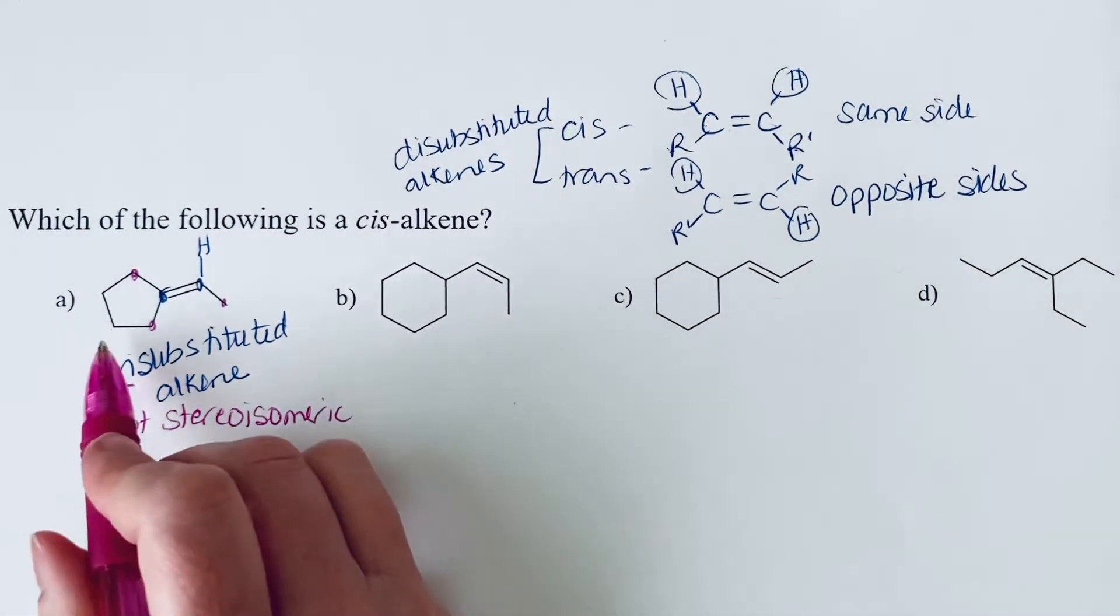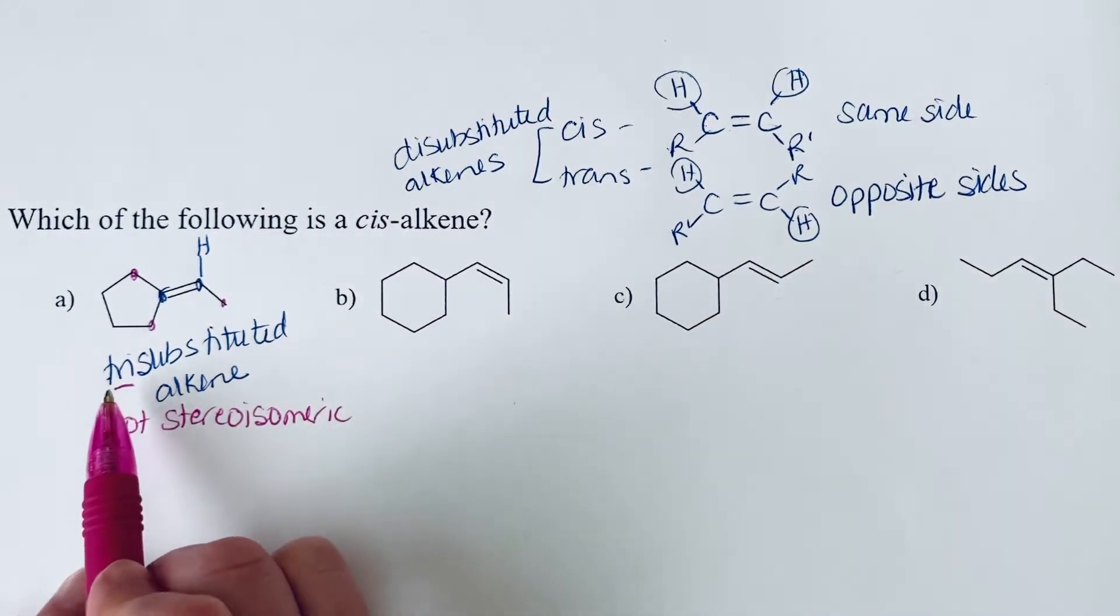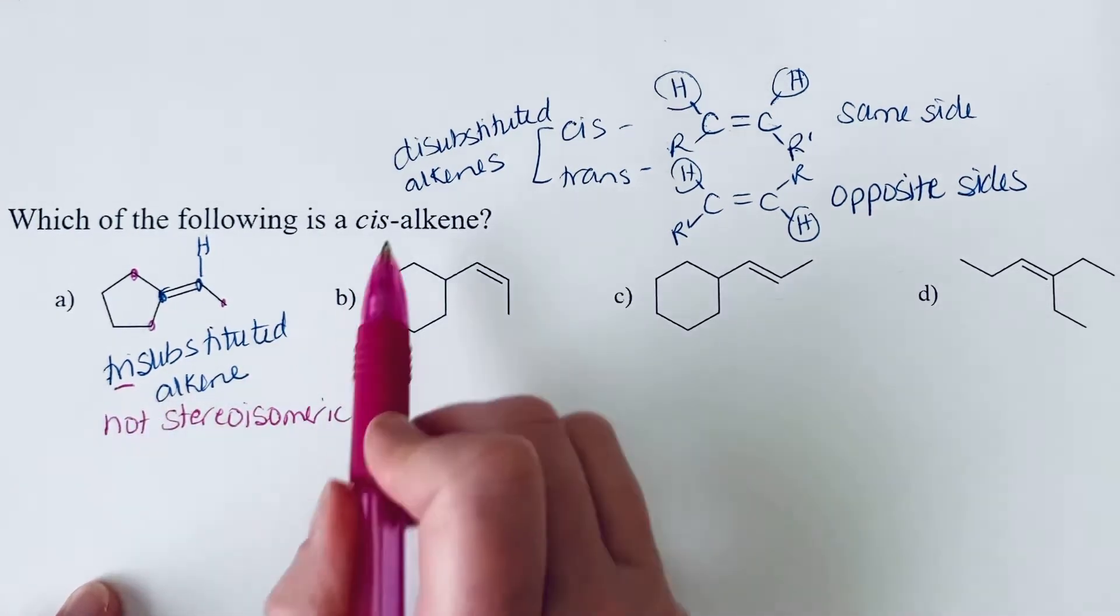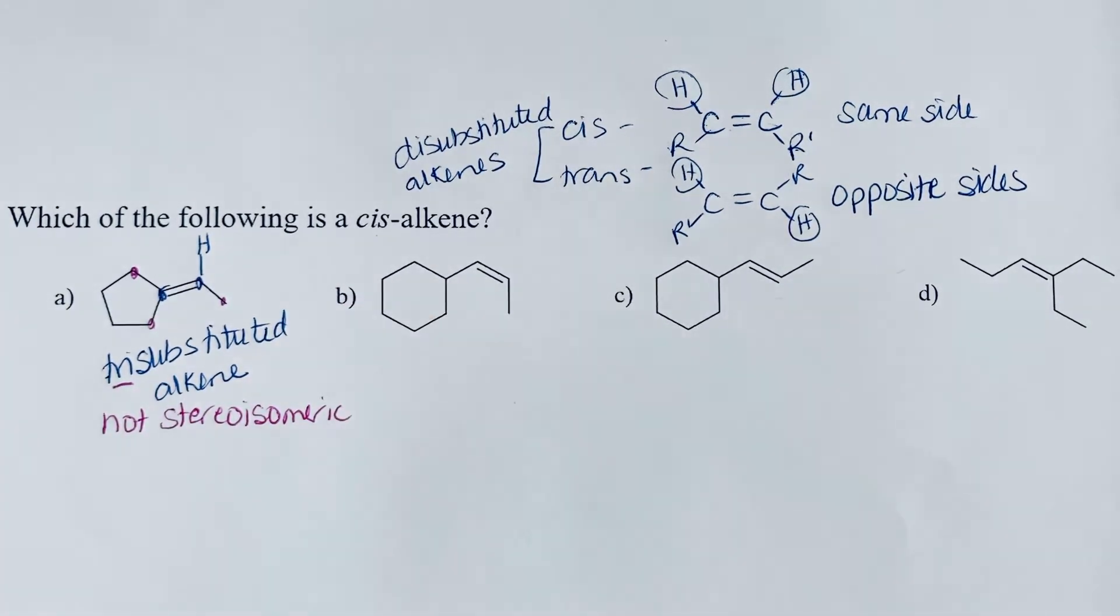And that's particular to this alkene. We can certainly have a tri-substituted alkene that has stereochemistry. We just wouldn't be able to describe it with cis or trans. We would have to move on to E or Z.